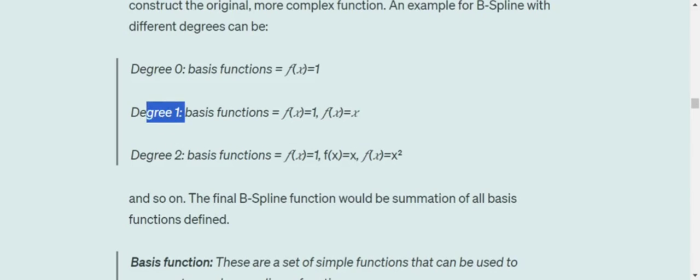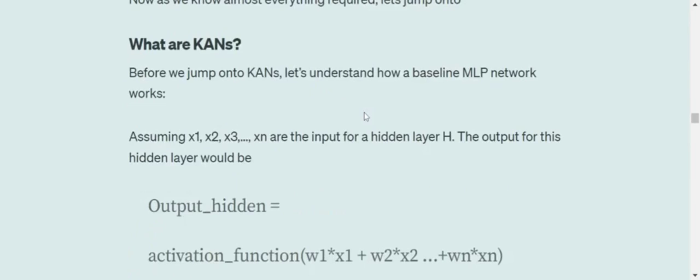Similarly, if the B-spline has a degree 1, basically it will include basis functions of degree 0, that is a constant, alongside a polynomial with degree 1, that is f(x) equals to x, as you can see. This might be a little complex to understand, but if you pay some attention, you would be able to get it.